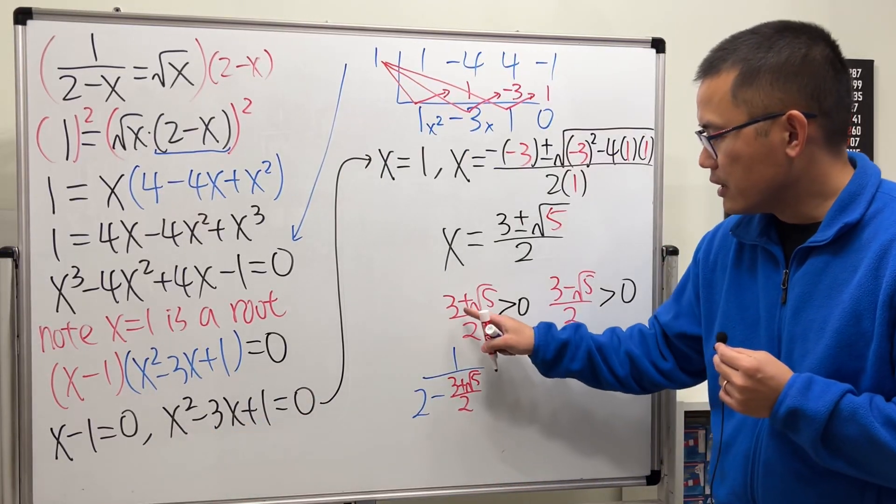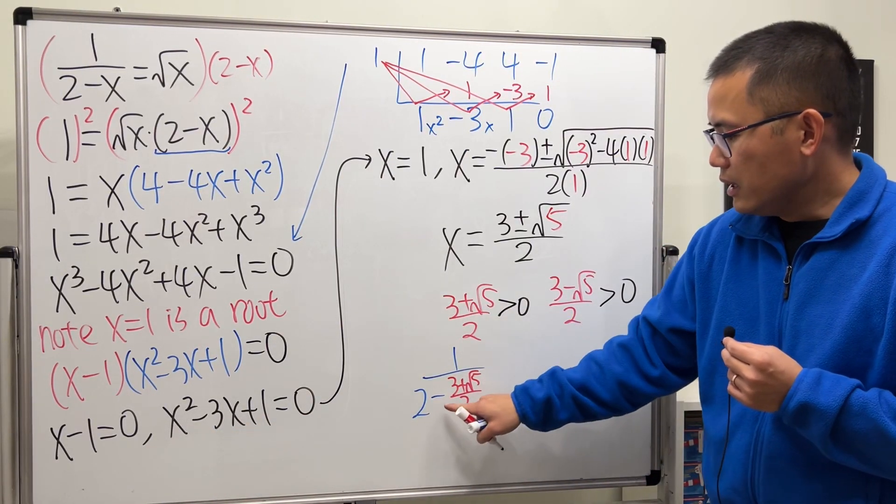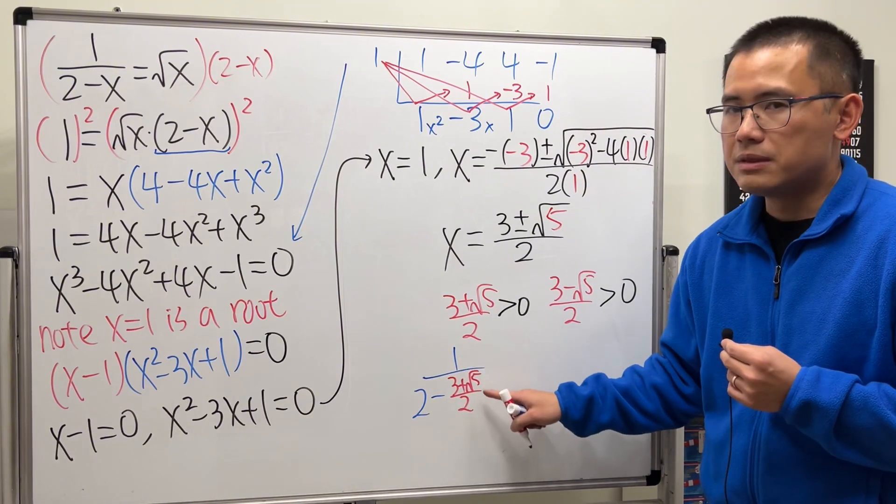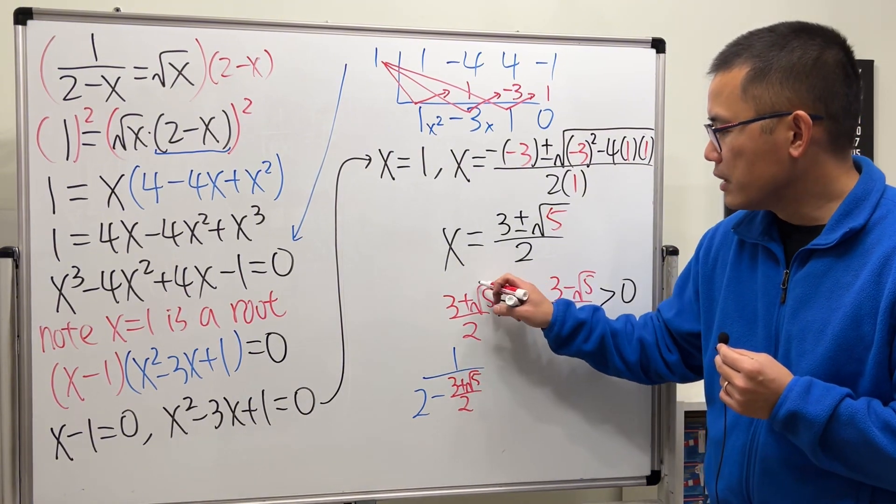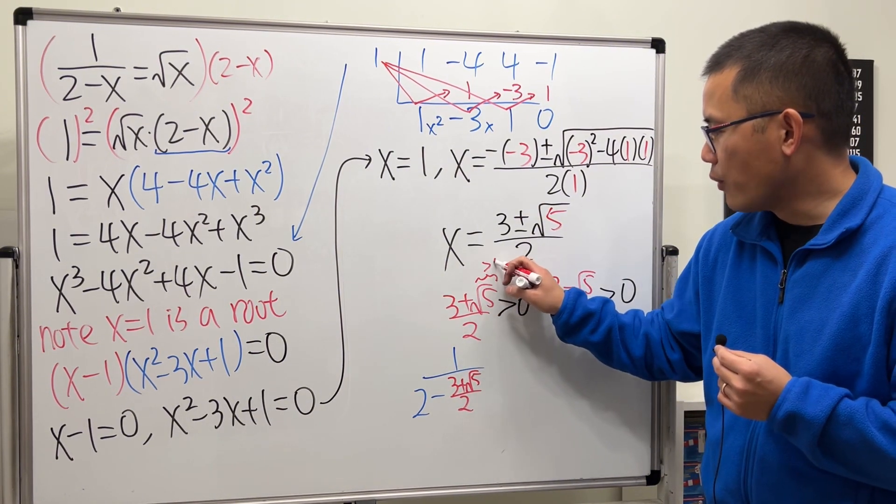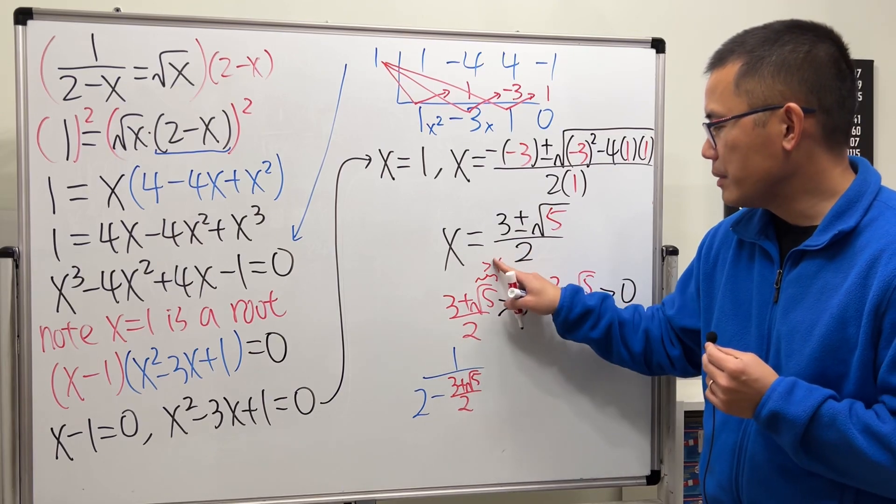Now check this out. This number, I claim it's bigger than 2. Why? Because this right here is of course bigger than 4, and it's bigger than 2.